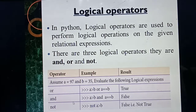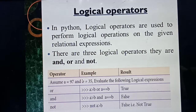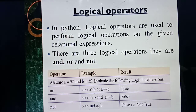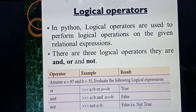Then the AND operator: both conditions must be true for the answer to be true, otherwise false. A greater than B - 97 is greater than 35, so the first condition is true. But A double-equal-to B: 97 equals 35? No. First condition is true, second condition is false. AND operator means both conditions must be true for the answer to be true, otherwise false. So the answer is false. Next, NOT means just opposite. NOT A greater than B - A is greater than B, that is correct, but NOT makes it false. The answer is false, which is the opposite of true.